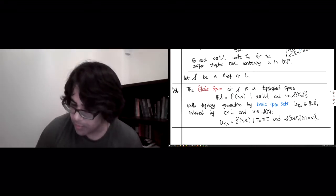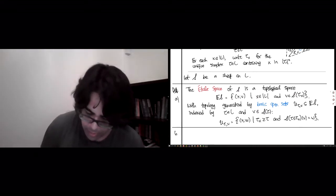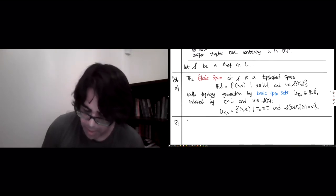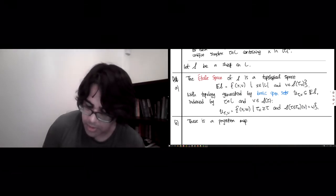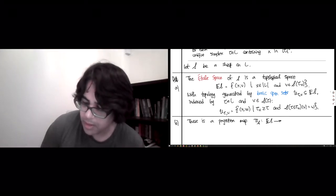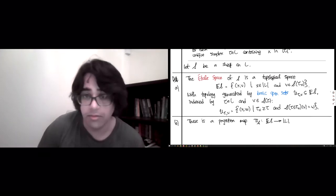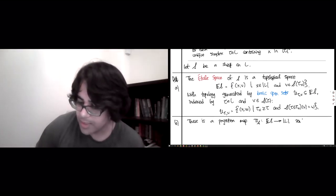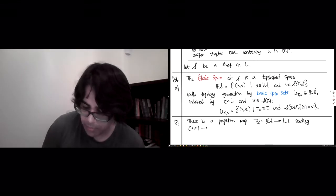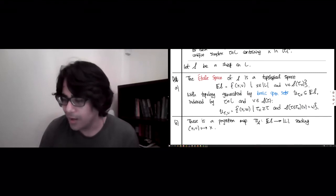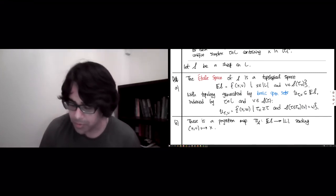And this space comes with a map which is a projection map. So it's a surjective map pi s, which is going from this étal space down to the geometric realization of L, sending each pair, so you just forget the vector part, and you send things back down to the point.